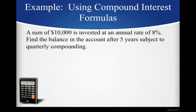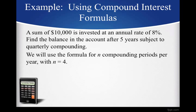All right, let's work through a couple examples. A sum of $10,000 is invested in an annual rate of 8%. Find the balance in the account after five years subject to quarterly compounding. Well, plug and chug math at its best, guys. So we know quarterly, there are four quarters in a year, so N is going to be four.